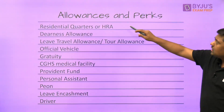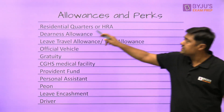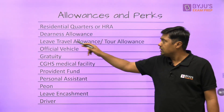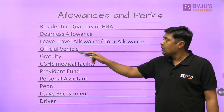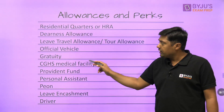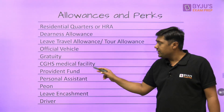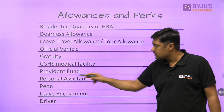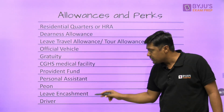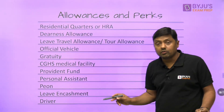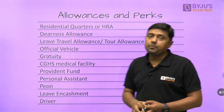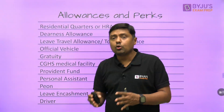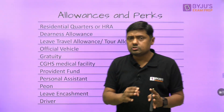These are the allowances and perks: residential quarter, dearness allowance, LTA, official vehicle, gratuity, CGHS medical facility, provident fund, personal assistant, peon, leave encashment, and driver. These benefits depend on the department — whether it is field work or office work.